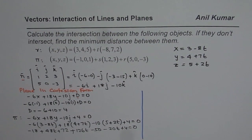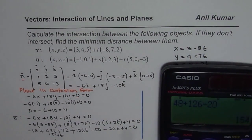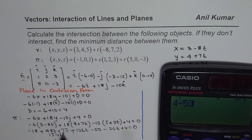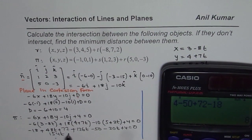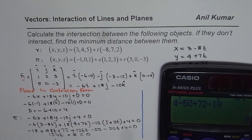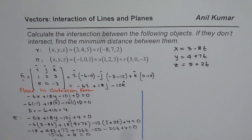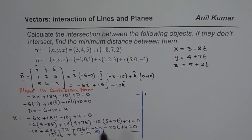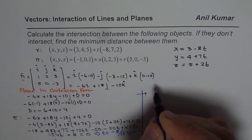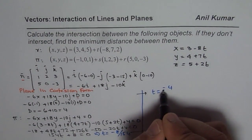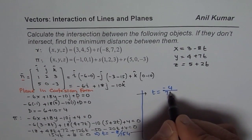Combining the t terms: 48 + 126 - 20 = 154t. Combining constants: -18 + 72 - 50 + 4 = 8. So 154t + 8 = 0, giving t = -8/154 = -4/77.